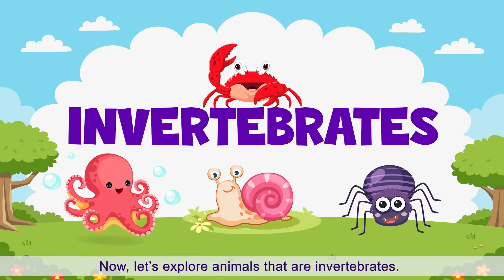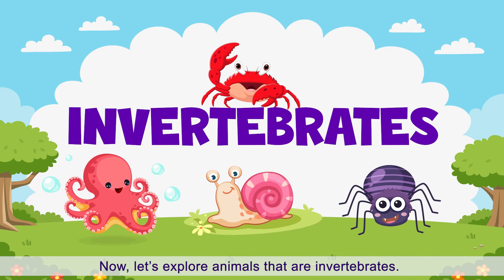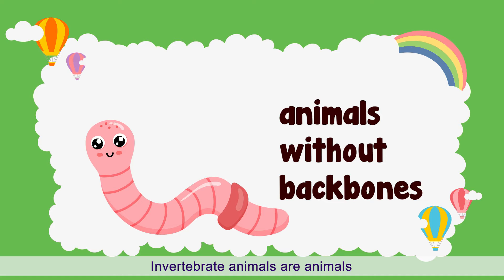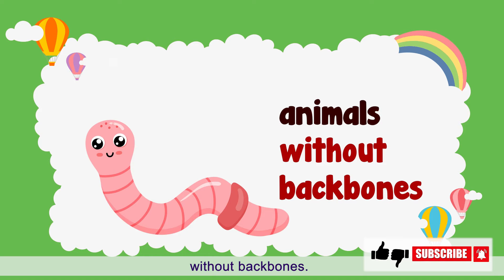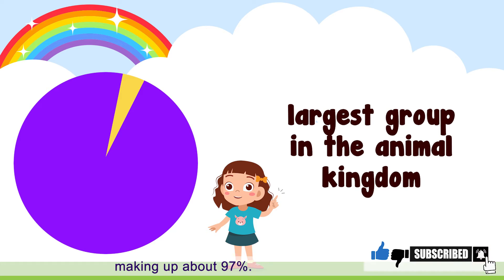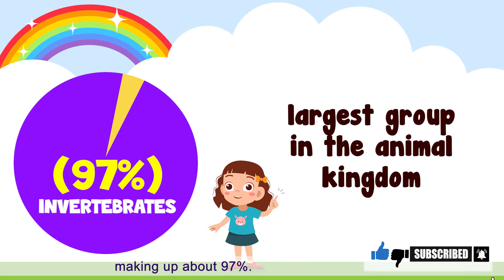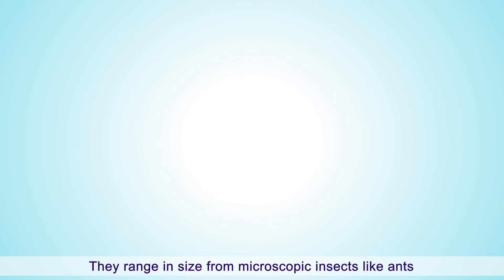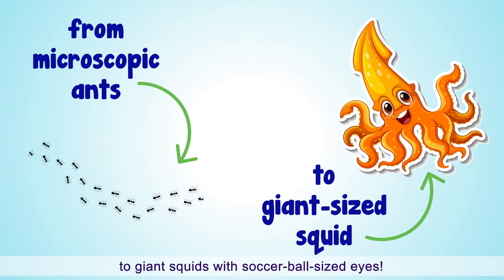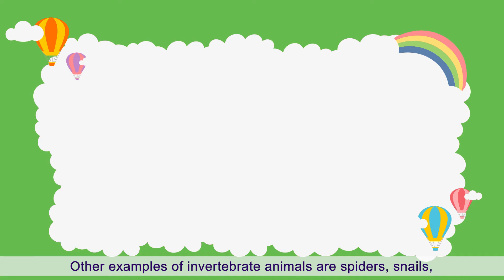Now, let's explore animals that are invertebrates. Invertebrate animals are animals without backbones. They are the largest group in the animal kingdom, making up about 97%. How cool is that? They range in size from microscopic insects like ants to giant squids with sucker ball-sized eyes.